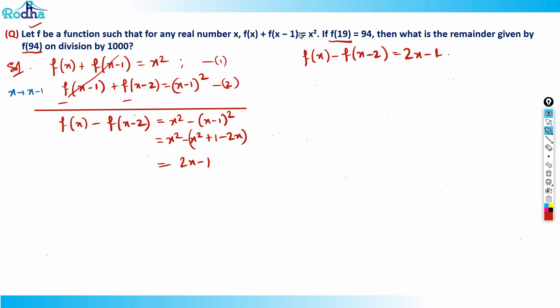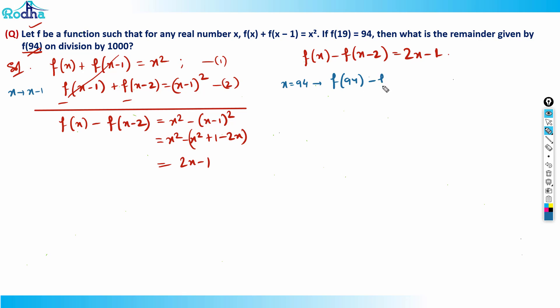Now I can relate equations with a minus sign. There's a big gap between f(19) and f(94), but with this recurrence stepping by 2, I can cover that gap. I need minus signs to cancel intermediate values. Now putting x = 94: f(94) - f(92) = 2(94) - 1 = 187.